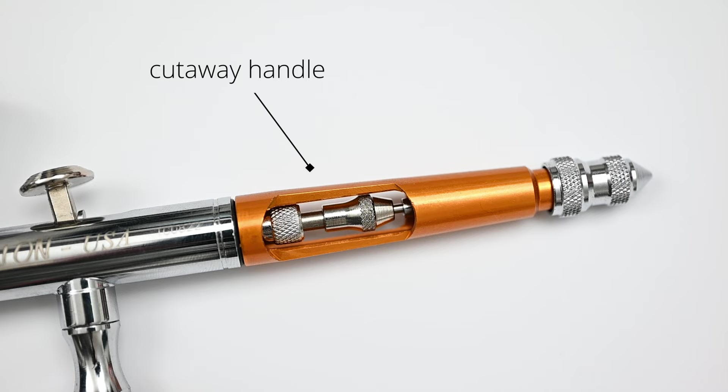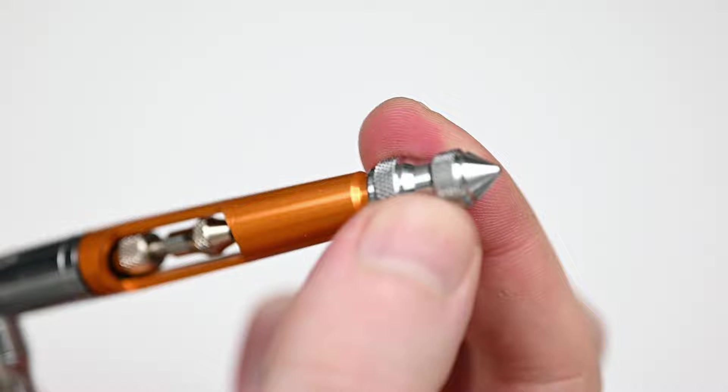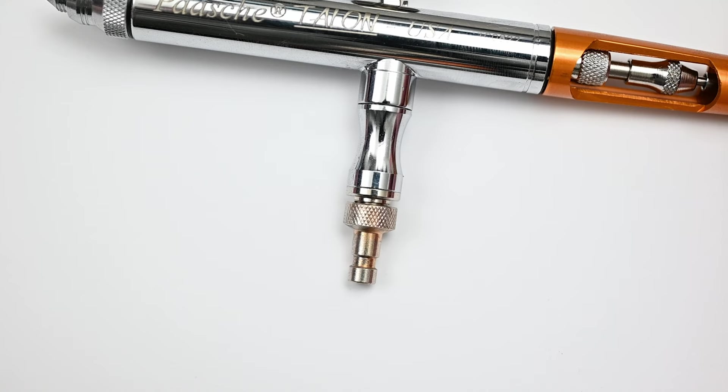And the rear handle has some extra features, like a cutaway. You could use this to quickly flush out any paint within your airbrush. You can also adjust your trigger tension with this knob right here while the handle's still on, which is a very nice touch. And on the back, you can adjust this knob to control how far back you can pull on the trigger. I've never been a big fan of these, but extra features is always a good thing.